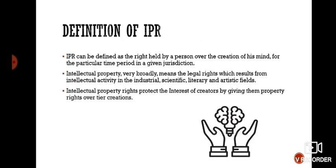Definition of IPR: what exactly does IPR mean? IPR are legal rights a person has over ideas they have created using their own minds. In other words, intellectual property is a category of property that includes intangible creations of the human intellect. IPR can be defined as the right held by a person over the creation of his mind for a particular time period in a given jurisdiction.